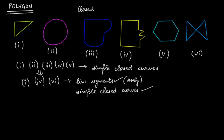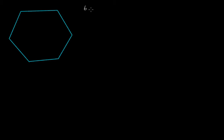Now we know what polygons are, and in this video tutorial we want to discuss some other points or terms related to polygons. I have selected this fifth polygon and taken it here. The first point I want to discuss is that this polygon has one, two, three, four, five, and six line segments — it is made up of six line segments.